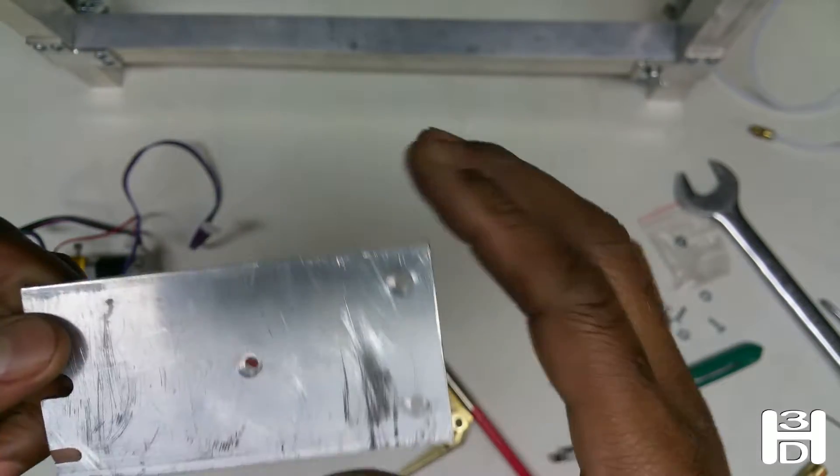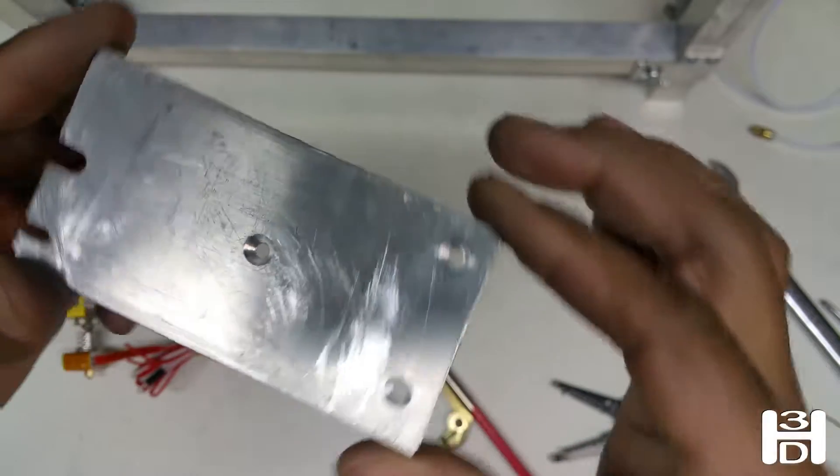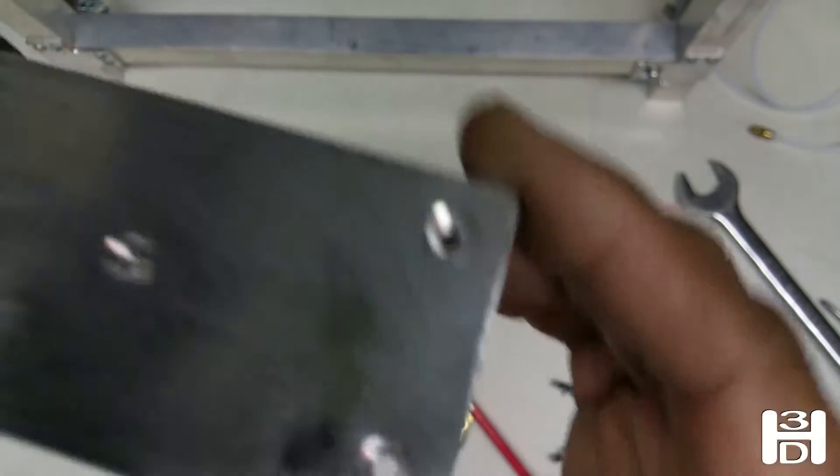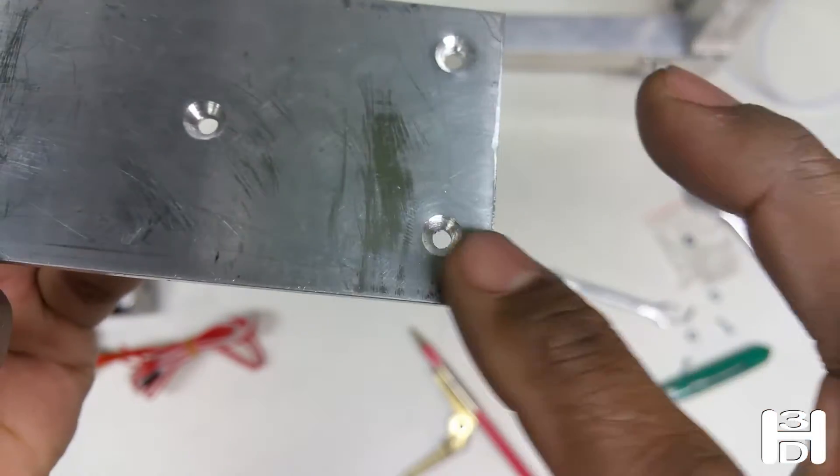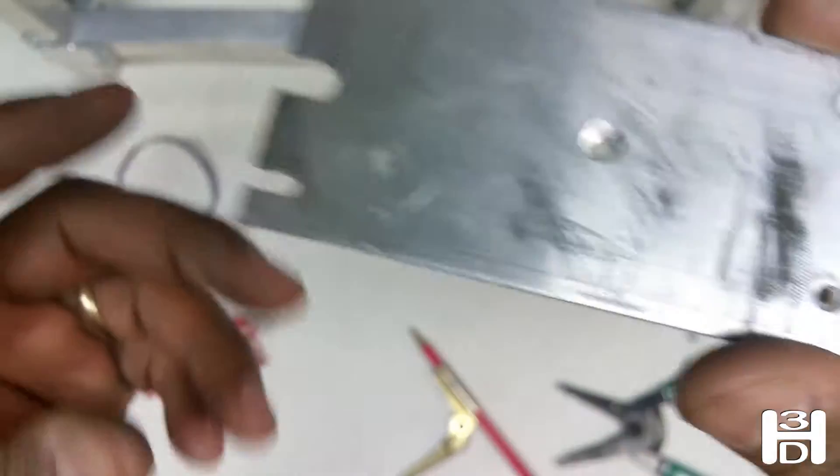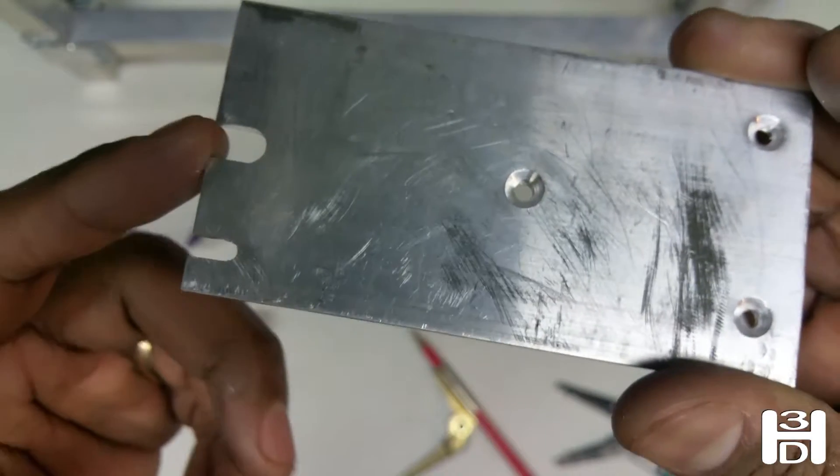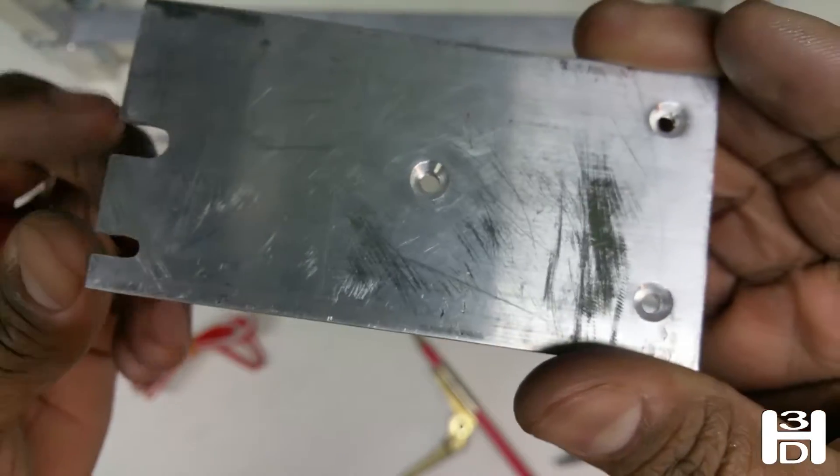This will attach to the actual printed extruder carriage. These bolt holes attach it to the extruder carriage. These notches are where the extruder itself locks in.